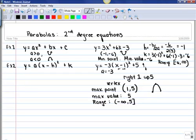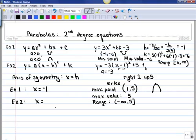Some other features of the parabola are the axis of symmetry. The axis of symmetry cuts the parabola in half and always has the equation x equals whatever the h value was of the vertex. For example 1, the axis of symmetry would be x equals negative 1. For example 2, our axis of symmetry would be x equals positive 1.